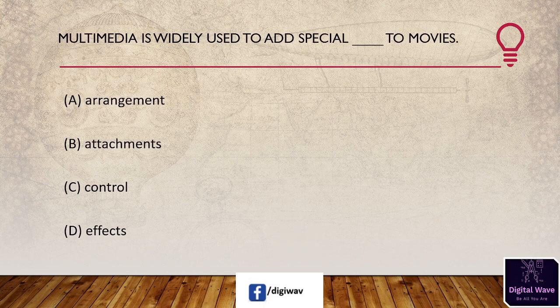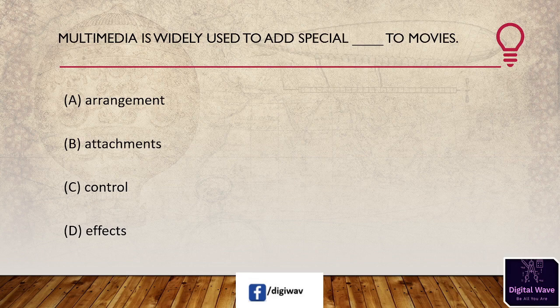Question 6: Multimedia is widely used to add special blank to movies. Options are: A) arrangements, B) attachments, C) control, and D) effects. The right answer will be D, effects.